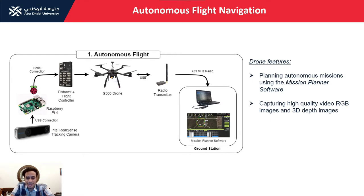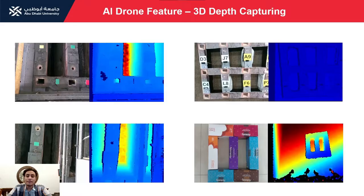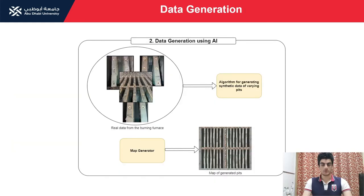Our first subsystem, responsible for the flight of the drone, uses a tracking camera — a smart camera with built-in sensors that tells the drone where it is located, enabling it to navigate by itself. We use a Pixhawk flight controller and communicate with the drone using a radio control system. For this project, we navigate the drone in a zigzag manner to match how the pits are aligned. When the mission is done, we construct a map of that section of pits from the footage. The drone also carries a 3D depth camera in addition to an RGB camera, providing further information about the status of the pit.